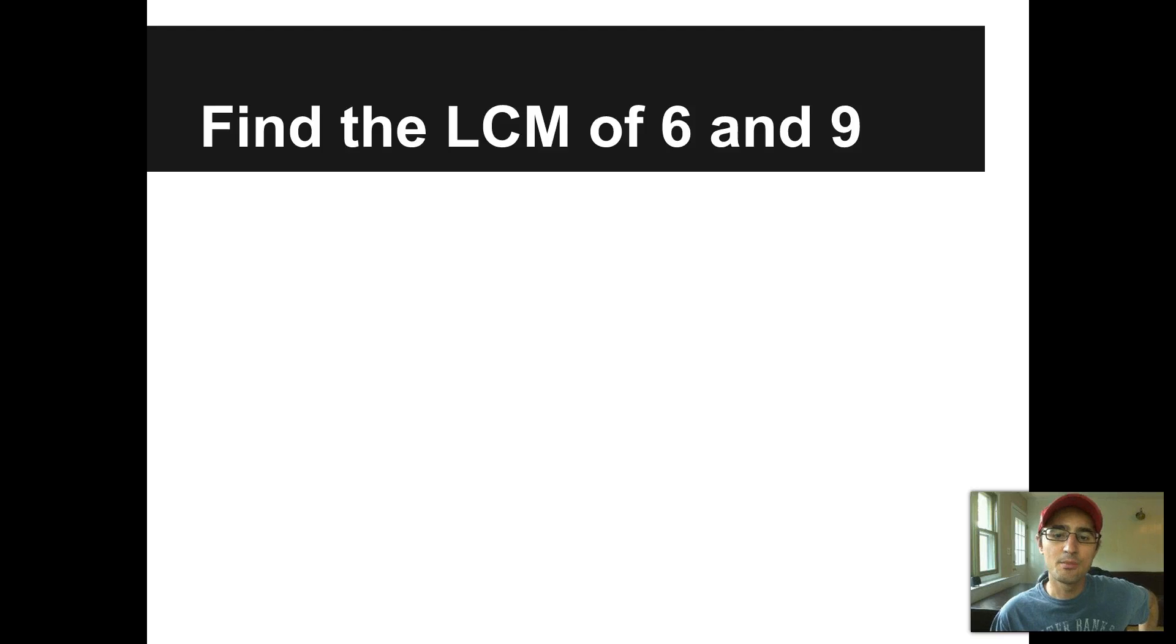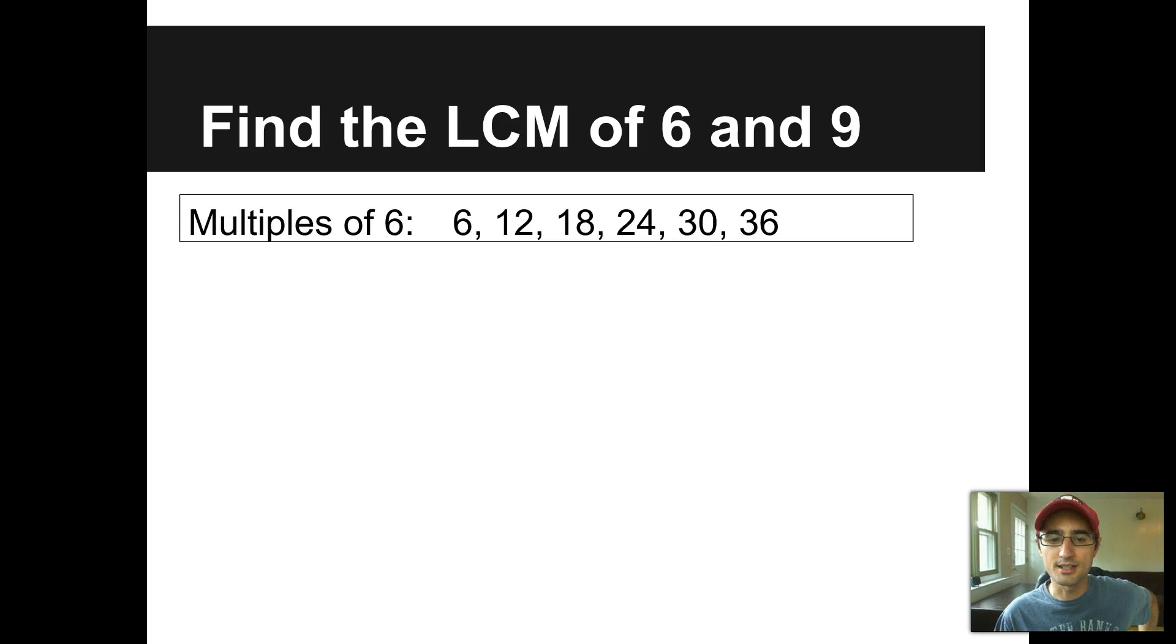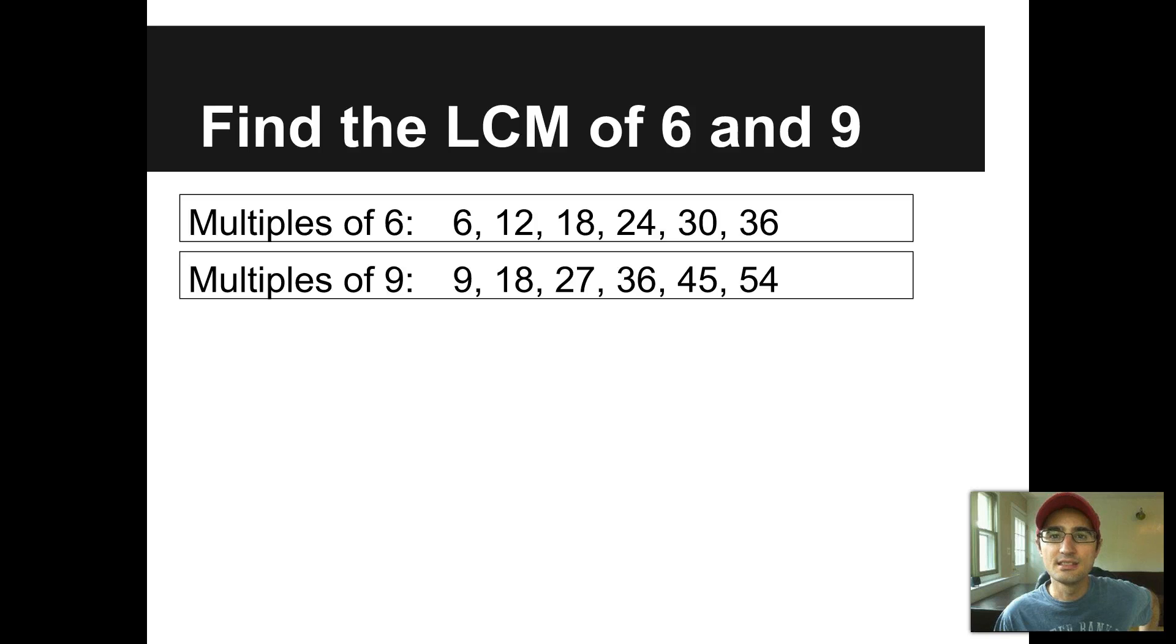Let's move on to multiples quickly. If we want to find the least common multiple of two numbers, we want to list the multiples, the first few multiples anyway, of those numbers and see what's in common. Listing the multiples of 6 is like counting by 6s. We did that earlier. 6, 12, 18, 24, 30, 36, and that goes on forever. Multiples of 9, 9, 18, 27, 36, 45, 54. And so the question is, what do we see in both places?